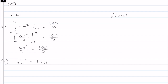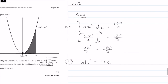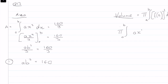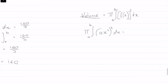So the volume is given as pi times the integral from a to b of f of x squared dx. In this case, it's going to be equal to pi times the integral from 0 to b — because we're going from 0 to b, so a is equal to 0 — of ax squared all squared, dx, equal to 1,280 pi. We can start off by dividing by pi on both sides, so we're left with the integral from 0 to b of a squared x to the 4 dx equals 1,280.